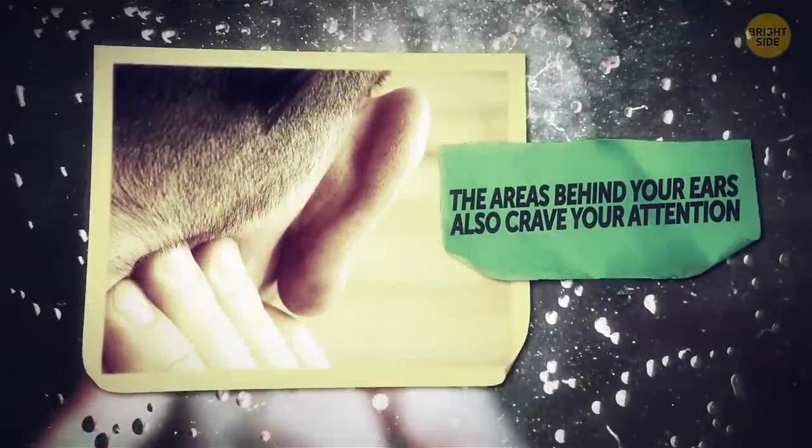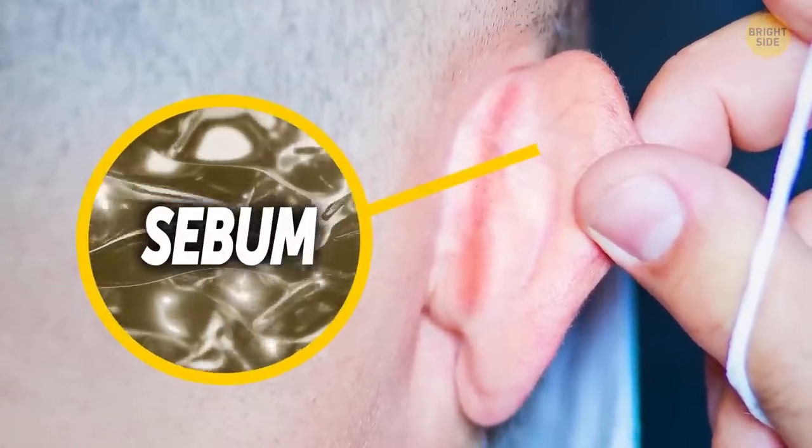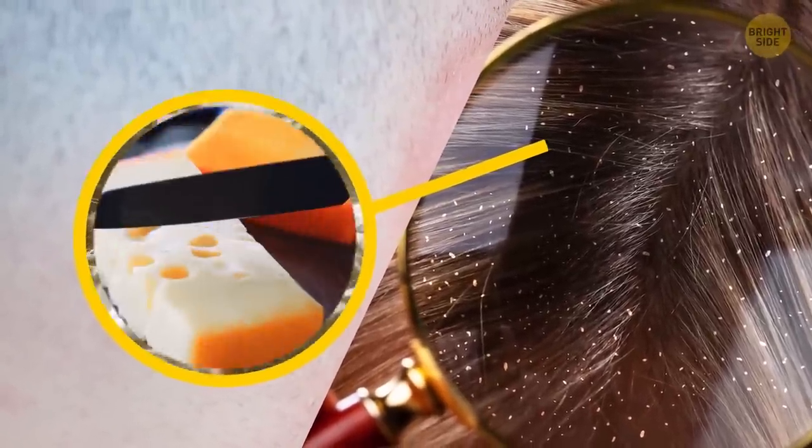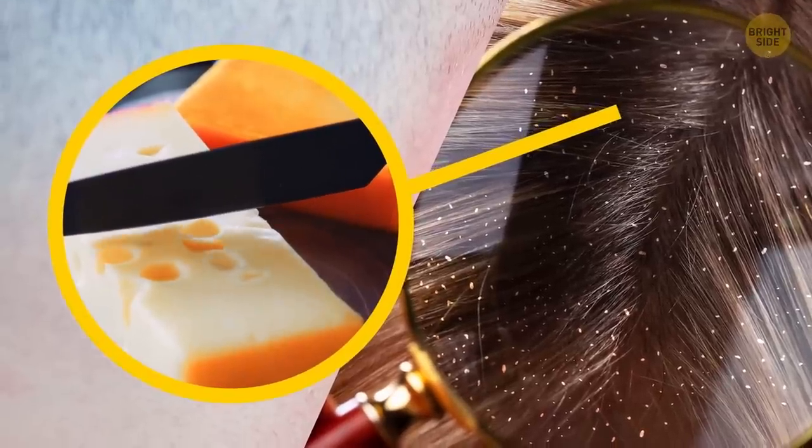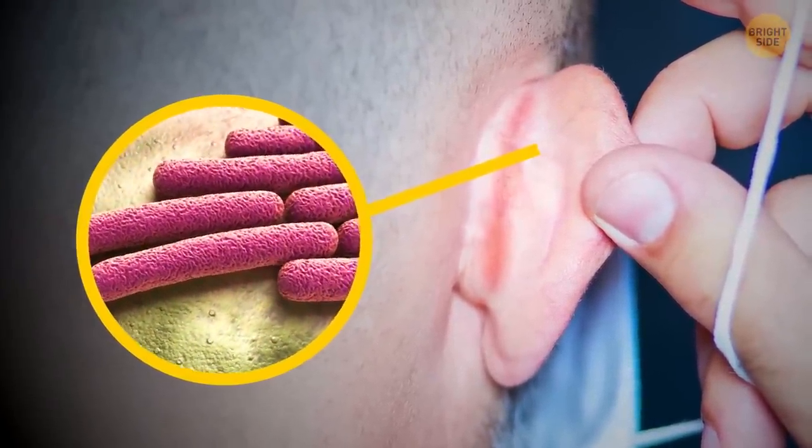The areas behind your ears also crave your attention and almost never get it. Don't make them sad, otherwise they'll accumulate sebum, the oily stuff that covers your hair when you don't wash it and might eventually start smelling like cheese. This is a warning sign there's a lot of bacteria behind your ears.